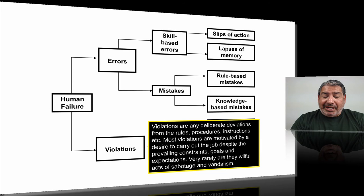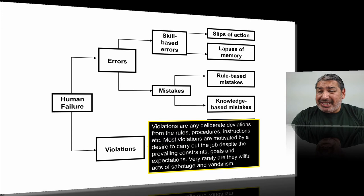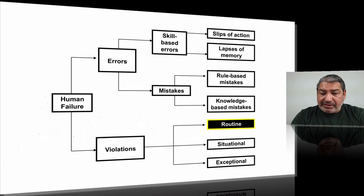Now let's look at violations, which are different from what we just talked about. Violations are any deliberate deviation from the rules, procedures, and instructions. Most violations are motivated by a desire to get the job done despite prevailing constraints, goals, and expectations. Very rarely are they wilful acts of sabotage or vandalism. There are three categories.